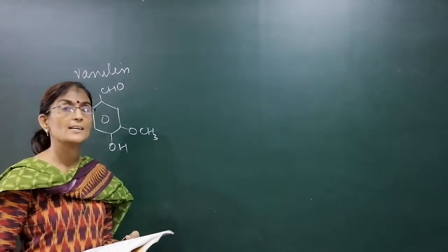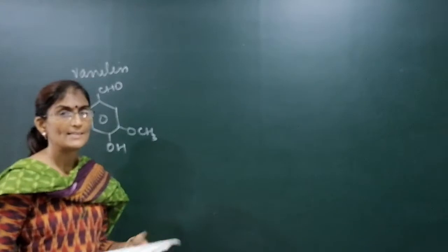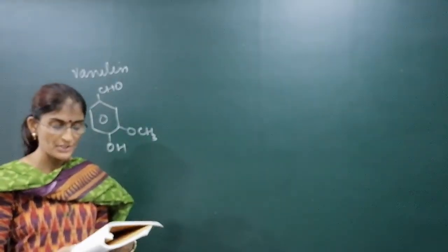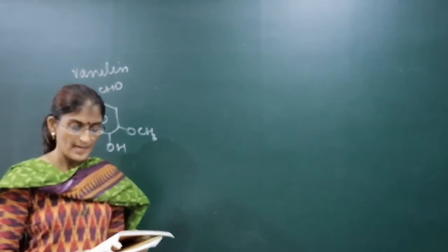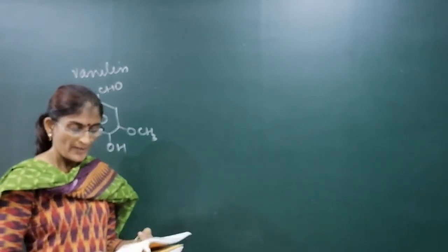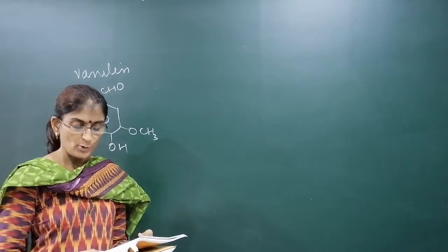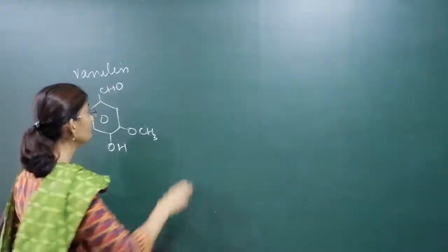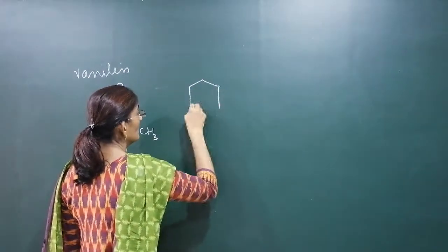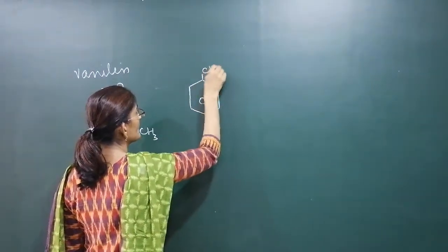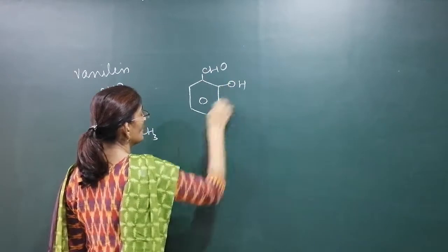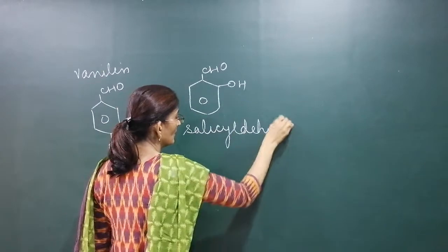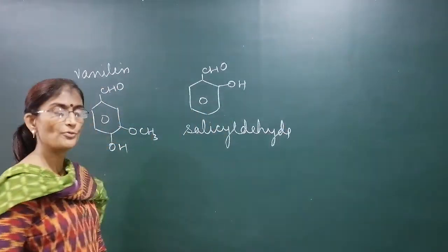Vanillin is an aldehyde compound, and it is used in the preparation of vanilla ice cream — it is present in vanilla beans. Then there is salicylaldehyde, obtained from meadow sweet. This is salicylaldehyde — its structure has a –CHO group and an –OH group on a benzene ring.